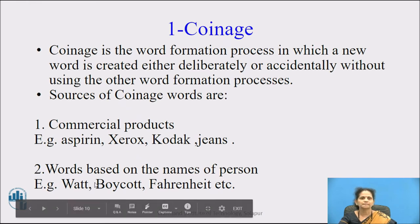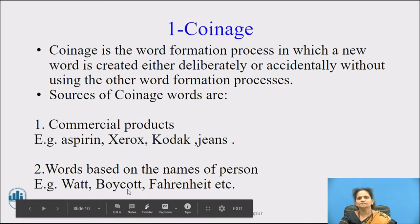The second source of coinage is words based on the names of persons, and the examples are watt, boycott, and fahrenheit. All these names are some famous persons' names — for example, James Watt.